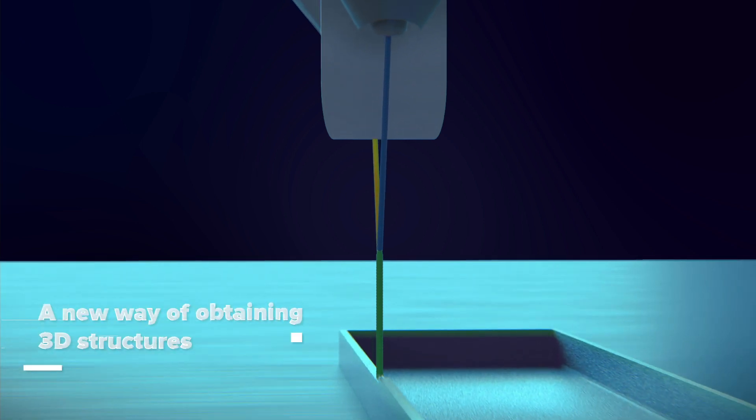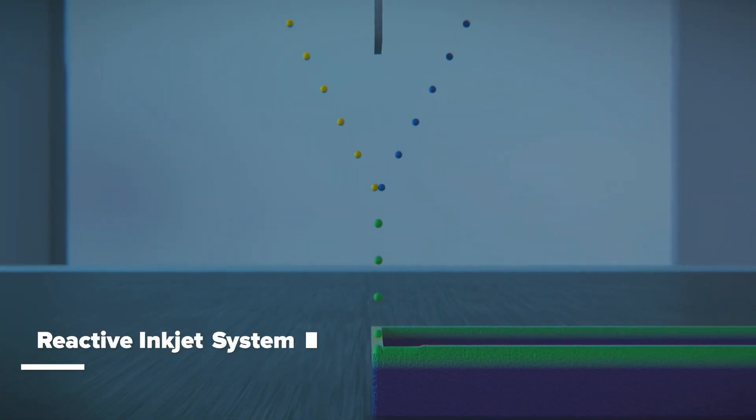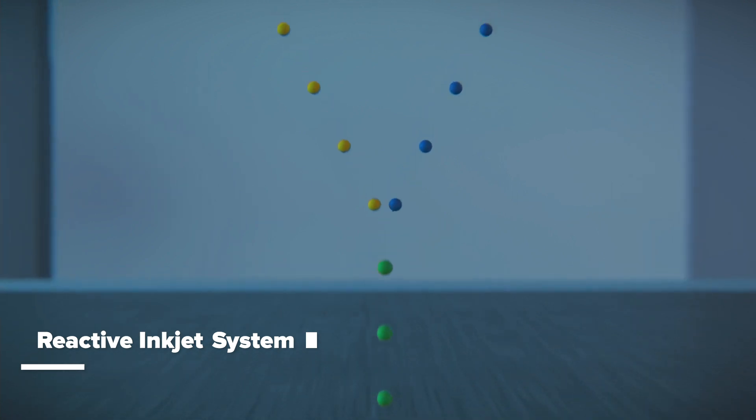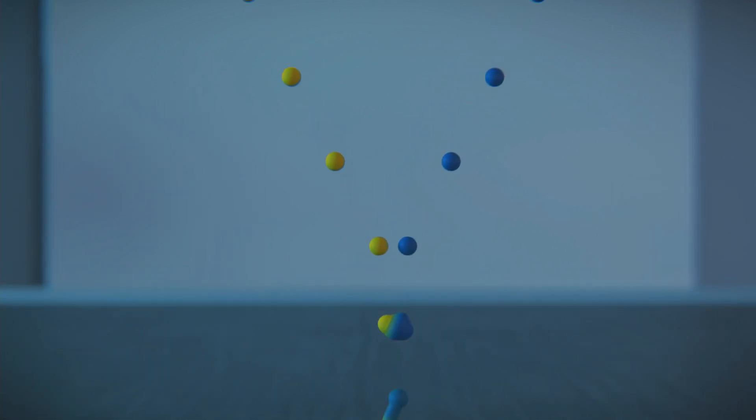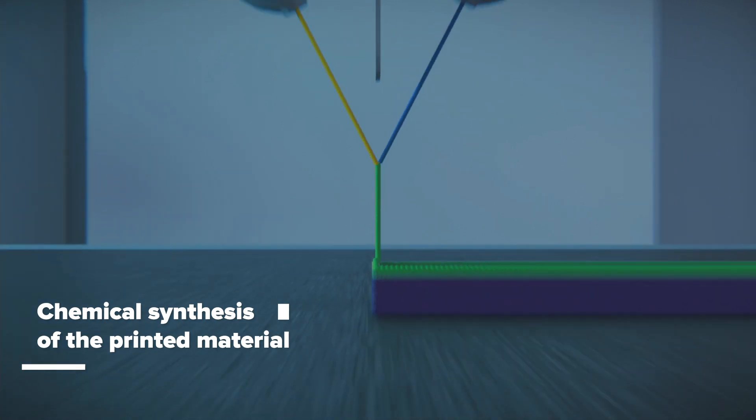We are excited to present a new way of obtaining 3D structures utilizing a reactive inkjet approach, which expands the range of possible materials for 3D printing. Unlike FDM and other existing 3D printing methods, this innovative technology allows for chemical synthesis of the printed material.